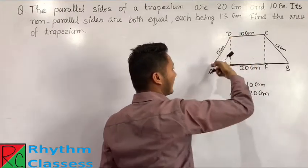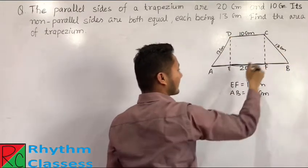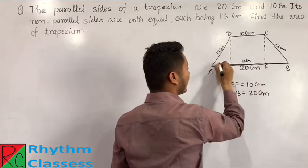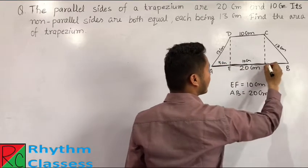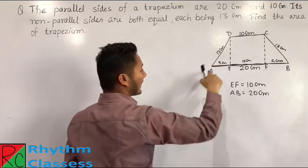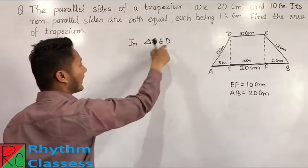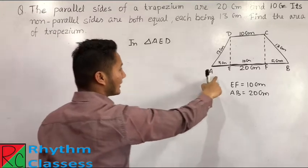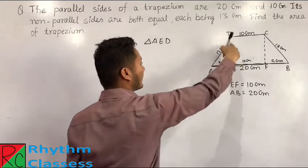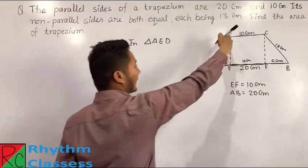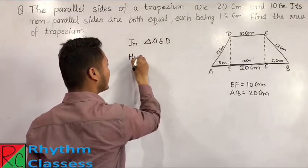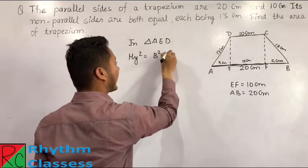Both sides form the same angle with the perpendicular height, the angles are the same and the measurement of both non-parallel sides is also the same. So the remaining distance of 10 cm is split equally: AE is 5 cm and FB is also 5 cm. In right-angled triangle AED, we have the base and hypotenuse but not the height. Using the Pythagoras theorem: hypotenuse² = base² + height².